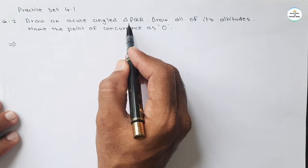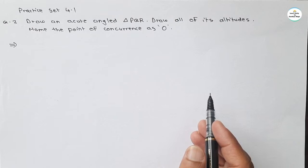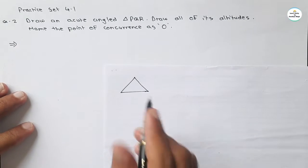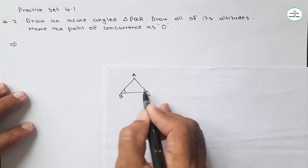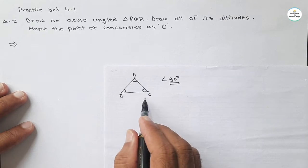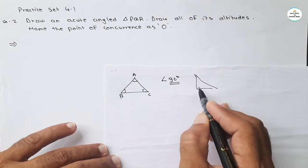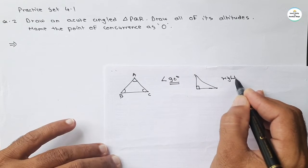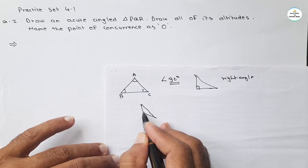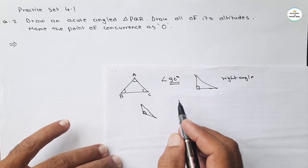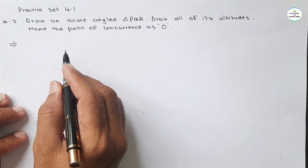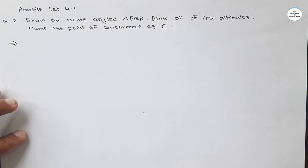What is asked? Draw an acute angle triangle. You know what is an acute angle triangle. If we draw a triangle where all angles A, B, C — all three angles are less than 90 degrees, then it is called an acute angle triangle. If one angle is 90 degrees, then it is a right angle triangle, and if one angle is more than 90 degrees, then it is an obtuse angle triangle.